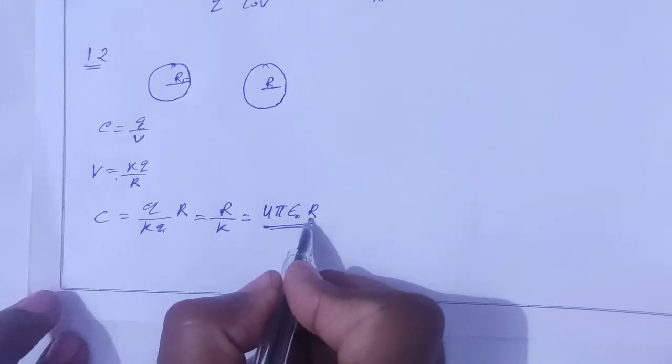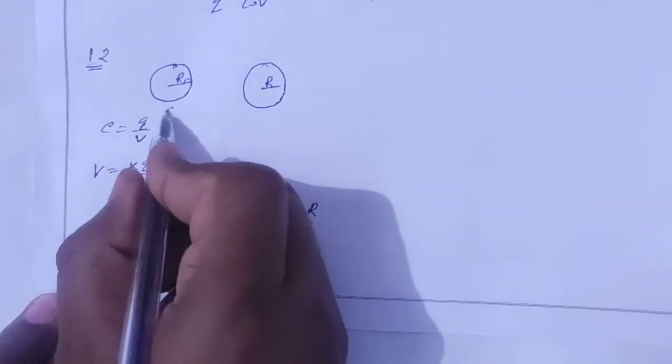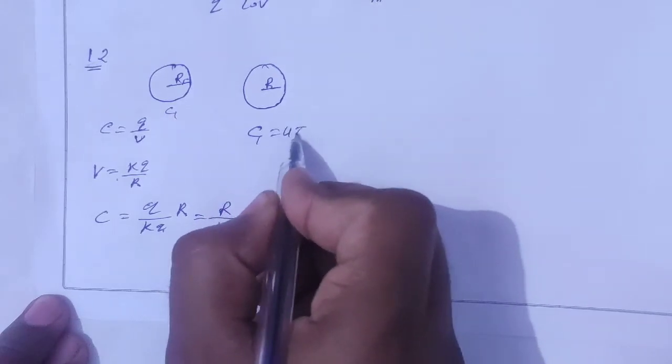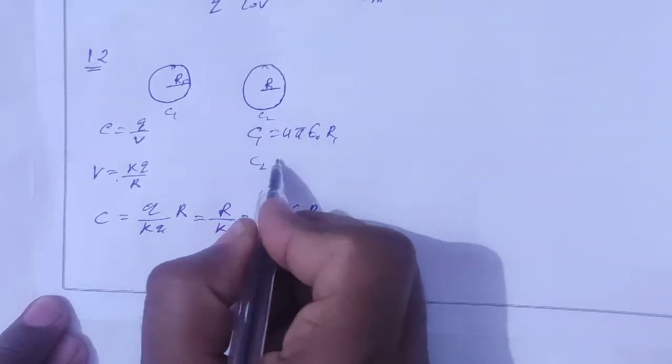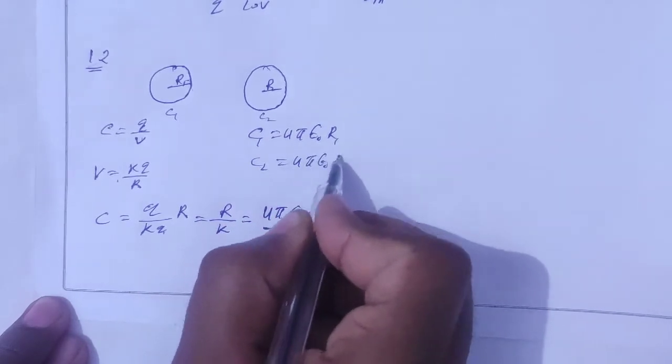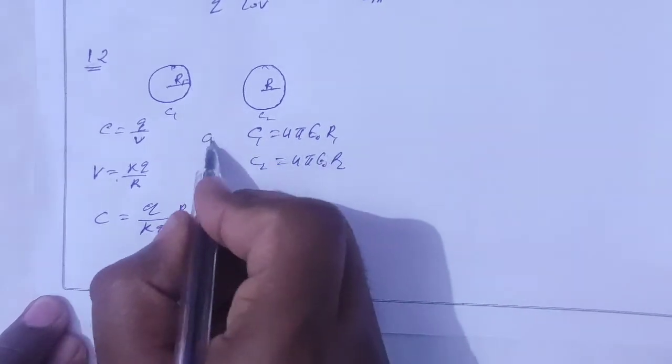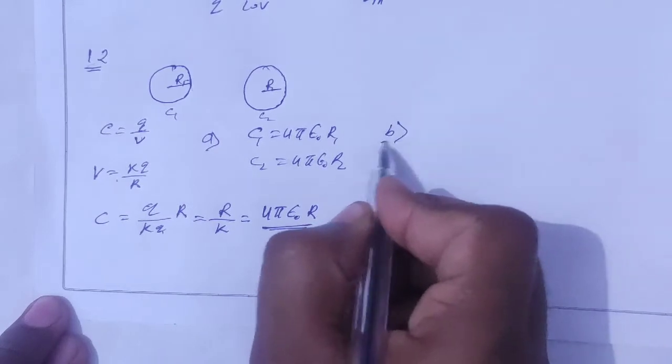So C1 equals 4π epsilon zero r1, and C2 equals 4π epsilon zero r2. This is the first part of the answer.